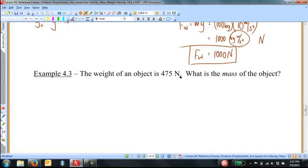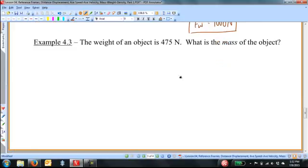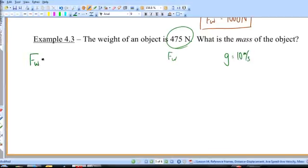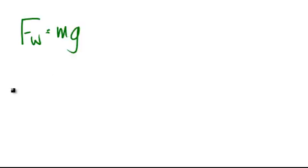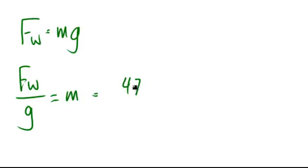Example 4.3. The weight of an object is 475 newtons. What is the mass of the object? We begin with what we know. We know what the weight of the object is. We know what g is. For the earth, that's 10 meters per second squared. We have a relationship between those. Weight is equal to m times g. We're looking for m. So we divide both sides by g in order to get m. We put in the numbers.